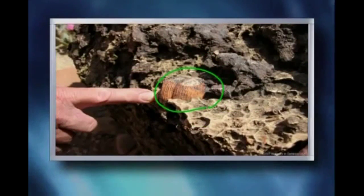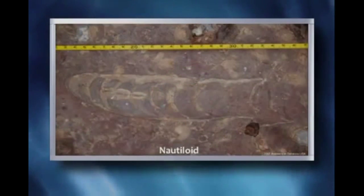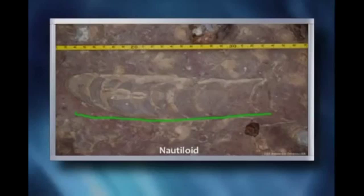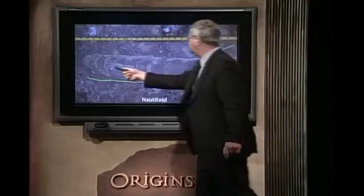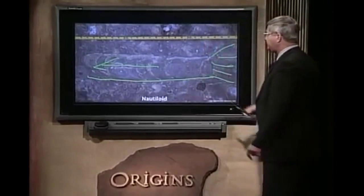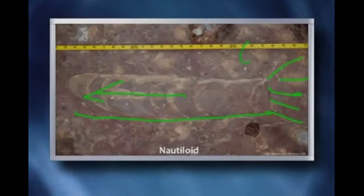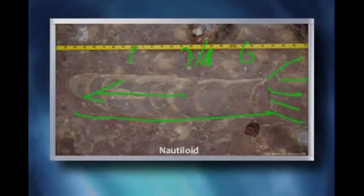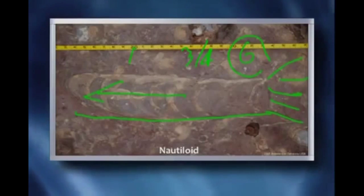Here we see a brachiopod — a lamp shell, a variation on a clam. And particularly in this limestone, one of the major finds in the canyon is the nautiloid fossil — a straight-shelled nautiloid. It had a head like a squid, with a tube down the center it used to suck in water and shoot it out, propelling itself like a miniature jet engine. We find nautiloid fossils in the Grand Canyon that are six feet long, one foot long, and some in between — meaning the little ones were babies, the big ones were parents and grandparents. So we find lots of these buried together, representing a whole living population that was rapidly buried.